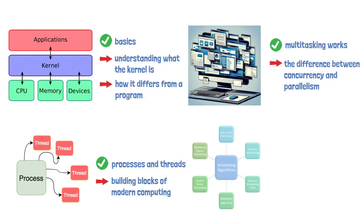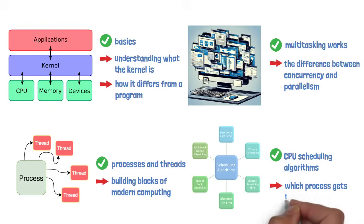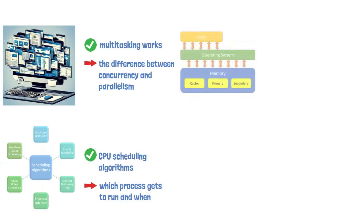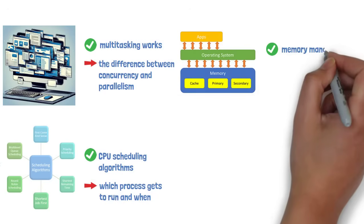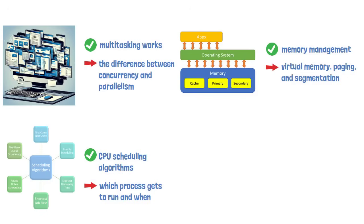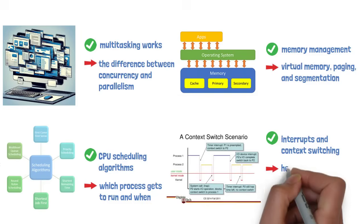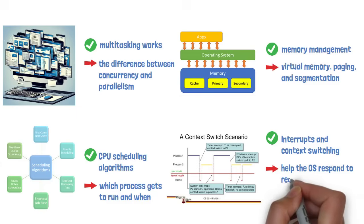We'll also look at CPU scheduling algorithms, the rules that decide which processes get to run and when. After that, we'll move into memory management, including concepts like virtual memory, paging, and segmentation. We'll cover interrupts and context switching, key features that help the OS respond to real-time events and switch between tasks efficiently.